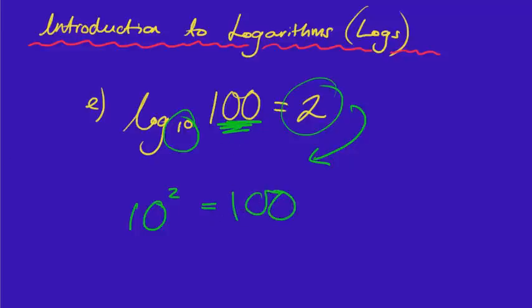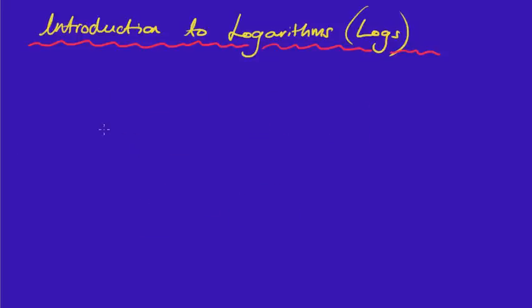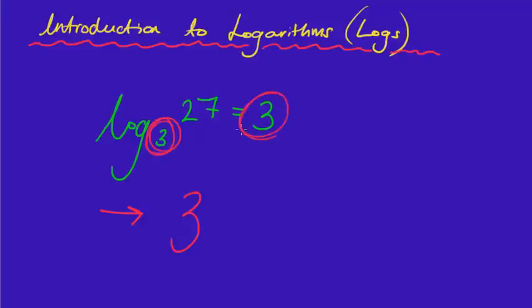Actually, I might give you one more of that particular type of question. I'm going to give you the log of 3, I might do 27 equals 3. So can you write that back in index form, please? Pause it, have a crack at it, and then play it. So hopefully you've put our base, which is 3, our indicey, which is 3, and then our answer, which is 27. Which obviously we know that 3 cubed is 27.